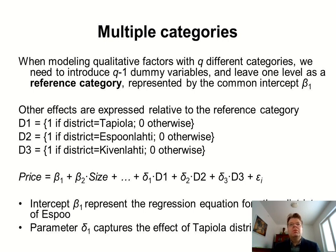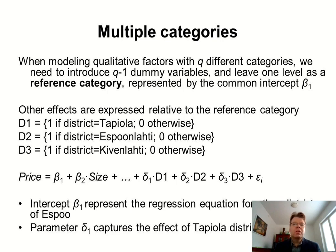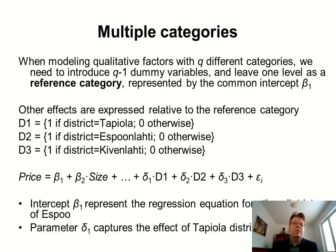A couple of issues about multiple categories. In this application I have excluded all districts other than those explicitly mentioned and used 'other district' as the so-called reference category. It is important that we always have some reference category and explicitly think about it. Even in the elevator example, the reference category is that there is no elevator. Here the reference category is 'other district', and those five explicitly named districts are then modeled with dummy variables. The delta coefficients of the dummy variables capture the incremental effect of a specific district on the price.